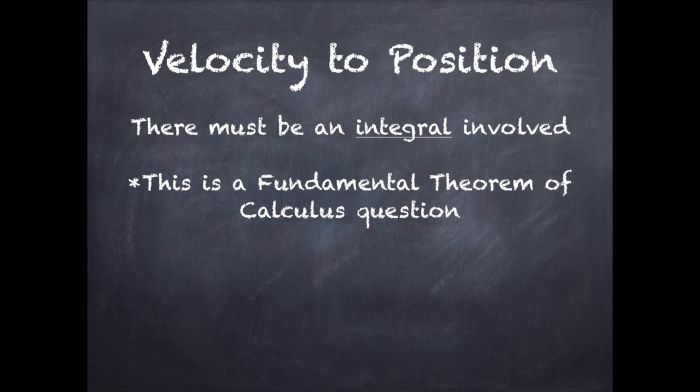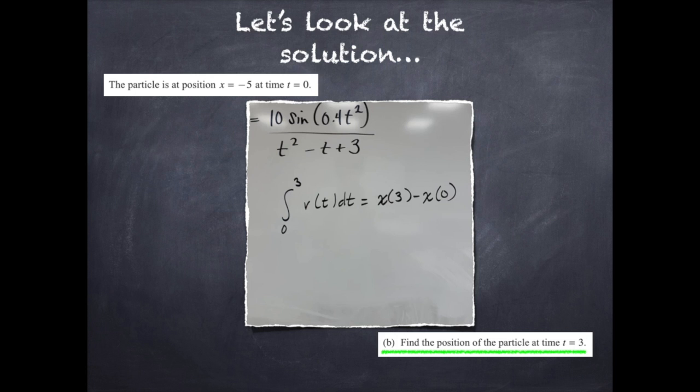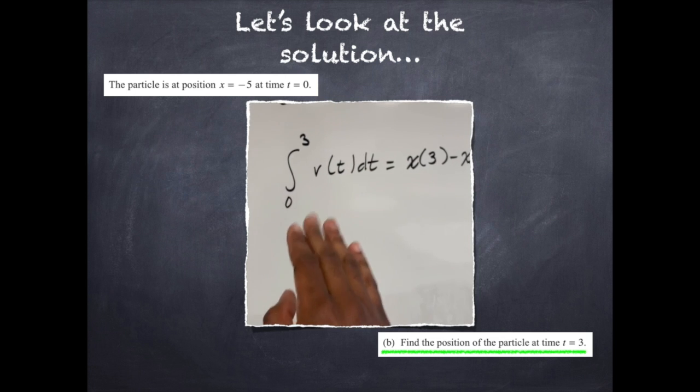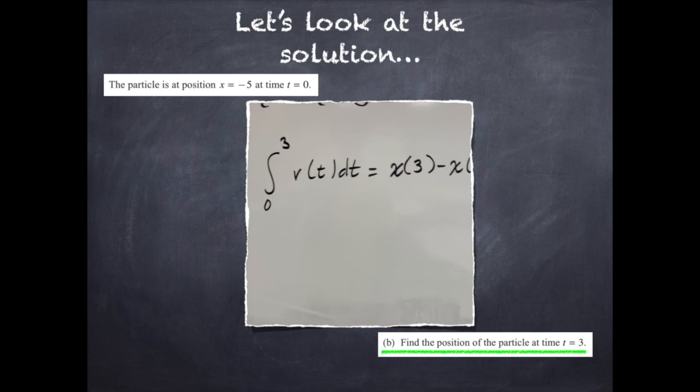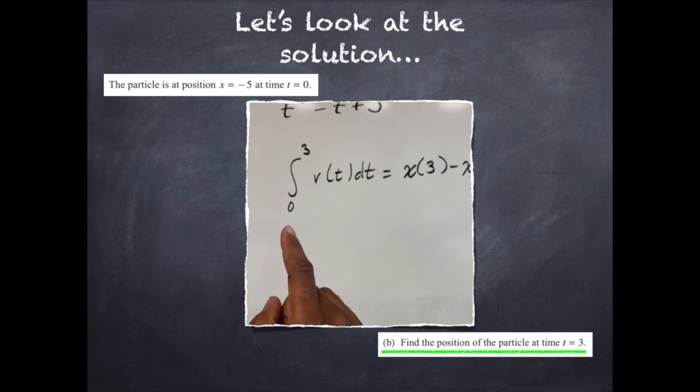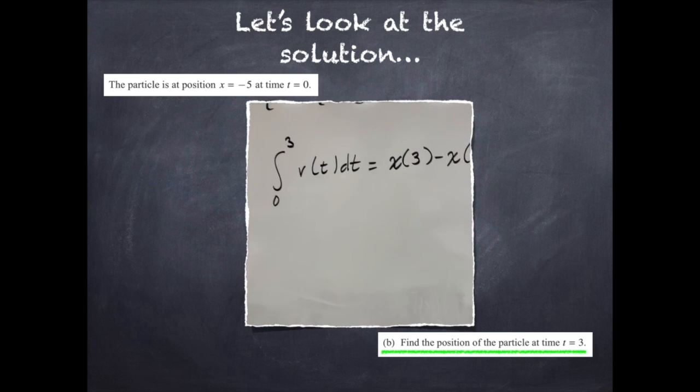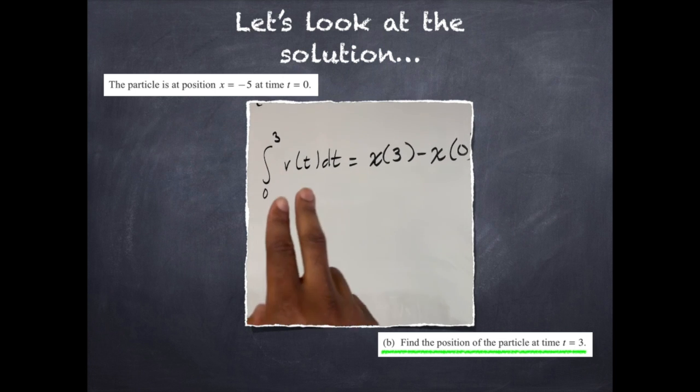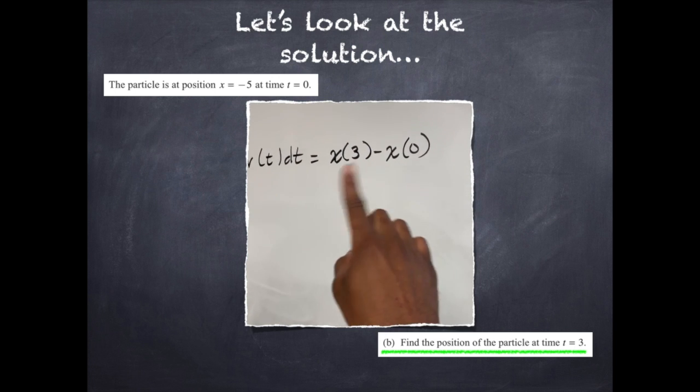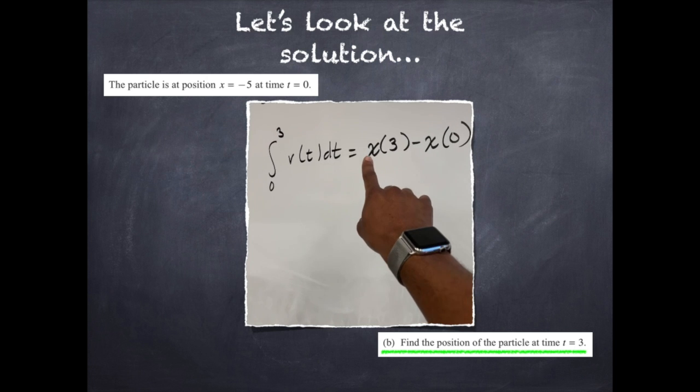Moving on to the solution. We start with this statement here, we are going to integrate our velocity from 0 to 3. Now remember this is a definite integral because we know that it has a lower and upper limit. So the fundamental theorem of calculus says that if we integrate a definite integral it would give us our anti-derivative, and this one is going to give us a position now.